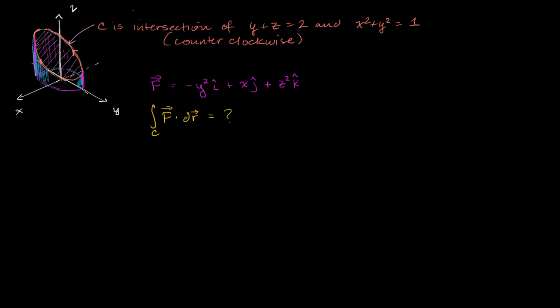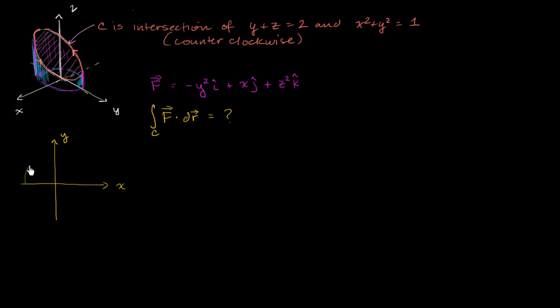So let's try to figure out this line integral, and hopefully we're going to get the same answer if we do everything correctly. The first thing we want to do is find a parameterization for our path — this intersection of the plane y plus z equals 2. You can imagine a hollow pipe that intersects the xy-plane at the unit circle. The x and y values take on every value on the unit circle, and the z value tells us how far above the unit circle we need to be to be on this path.